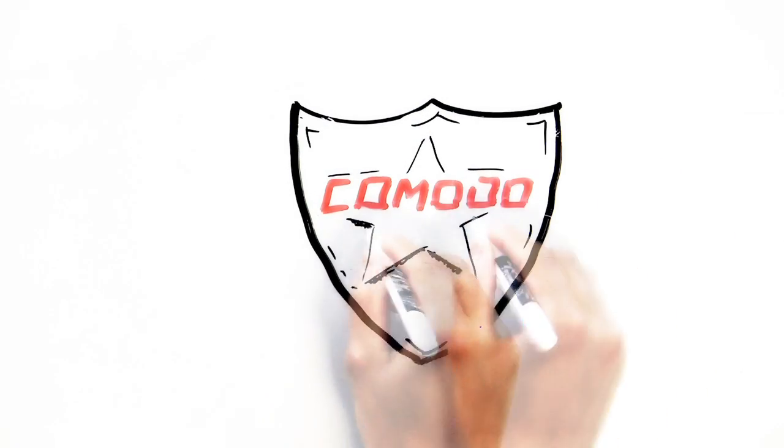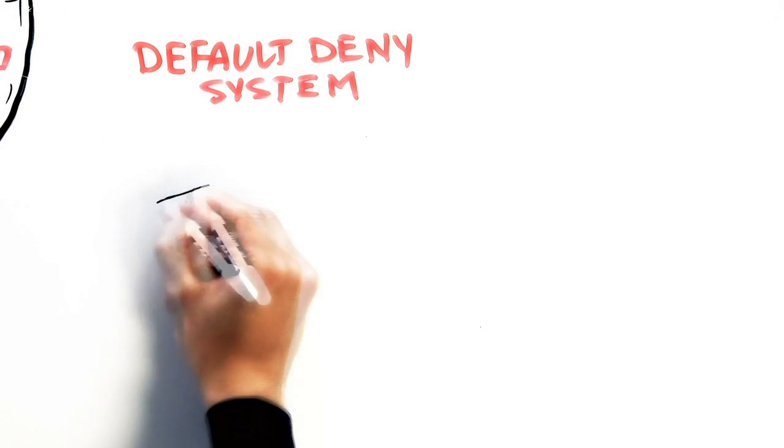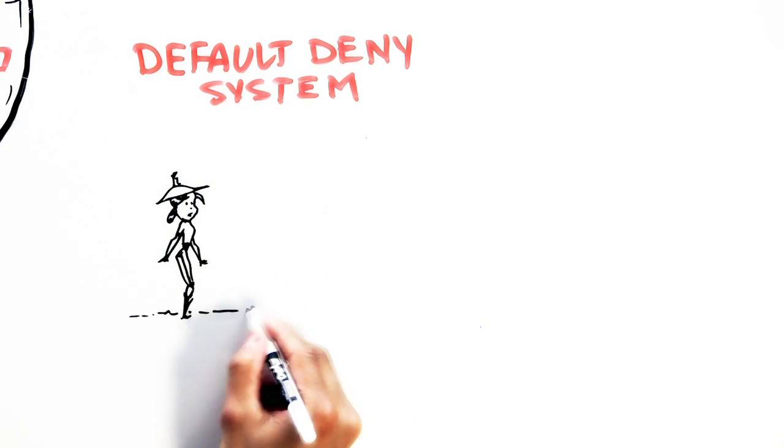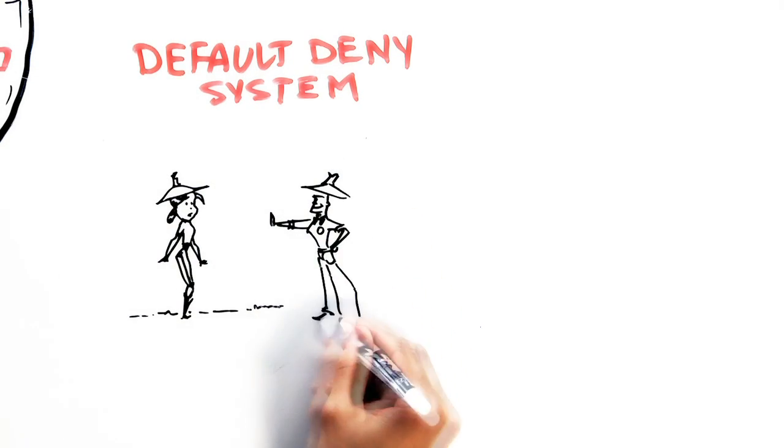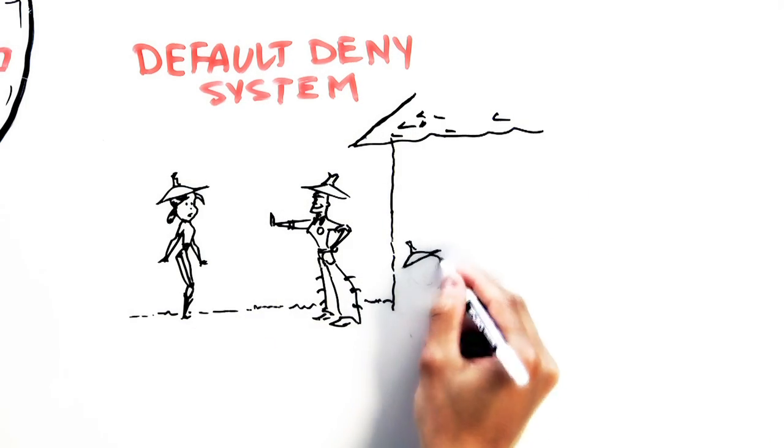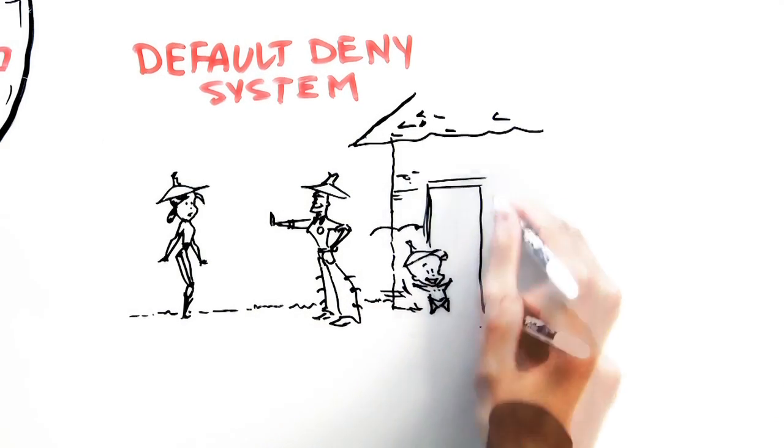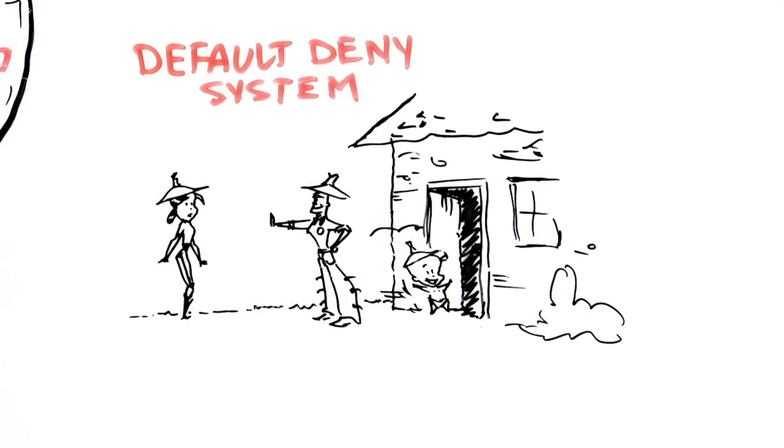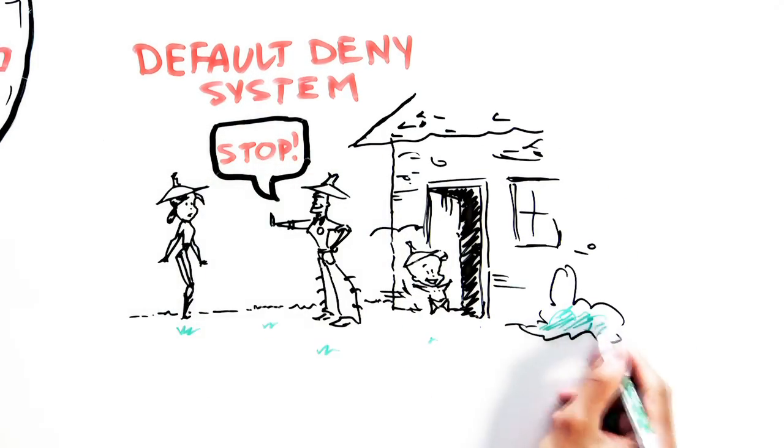What is default deny system and how does Komodo's default deny system with automatic sandboxing work? Now in a default deny system, instead of allowing everything that is not in the blacklist, you only allow what is in the whitelist. It's totally the other way around. You only allow what is in the whitelist.